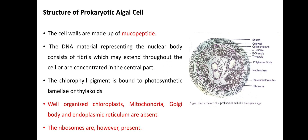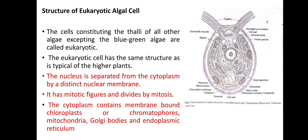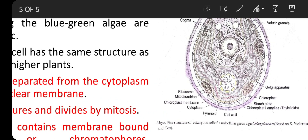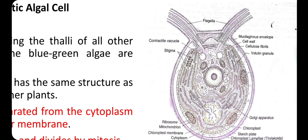Mitochondria, chloroplast, Golgi body, endoplasmic reticulum — membrane-bound organelles — are totally absent. However, ribosomes are present, which are of the 70S type. Now let us look at the structure of the eukaryotic algal cell.